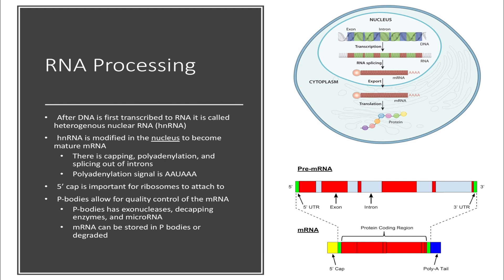Before we begin, let's make sure we are all on the same page. After DNA is transcribed into RNA in the nucleus, the initial transcript is called heterogeneous nuclear RNA, also called hnRNA. This RNA is then modified and becomes mRNA. During this modification process of turning hnRNA into mature mRNA, you will have capping of the 5' end, polyadenylation of the 3' end, as well as splicing out of introns. And as a reminder, this all occurs in the nucleus.